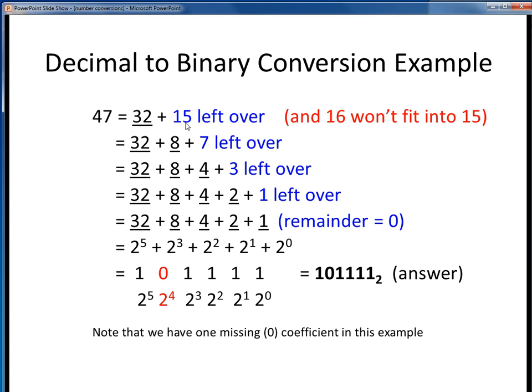Well, now 16 is too big, so we can decompose 15 into 8 with a remainder of 7. We decompose 7 into 4 with a remainder of 3. We decompose 3 into 2 with a remainder of 1. And 1 obviously decomposes into 1, and now we have a remainder of 0.